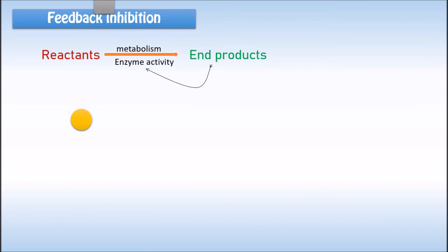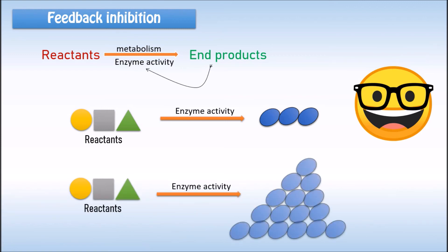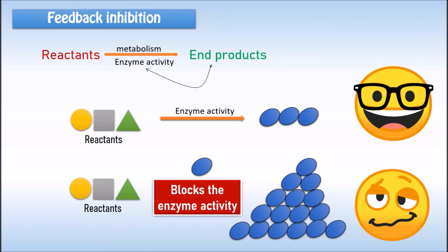When there is only a small amount of products, the enzyme will not be inhibited and the metabolic pathway will continue to make more products. When there are lots of products produced, it will block the enzyme preventing the production of new product until the existing supply has been used up, thereby limiting the production of more end products than required and preventing wasting chemical resources.